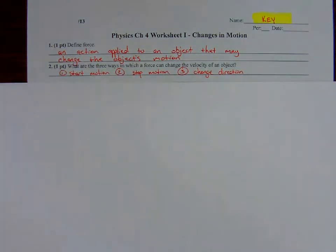Number two, what are the three ways in which a force can change the velocity of an object? So we're talking about changing its motion in general. We're still thinking about our definition of force that we went over in number one, changing an object's motion. What does that mean? Well, we have three options here.